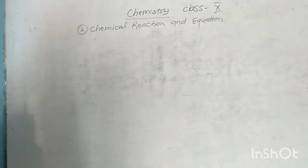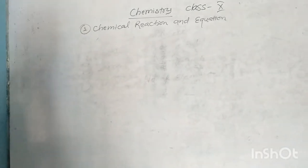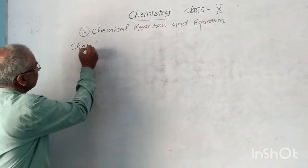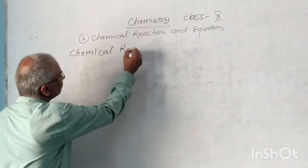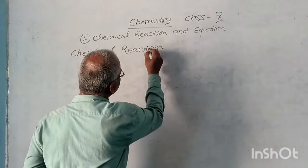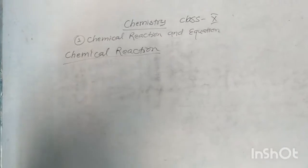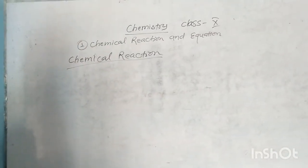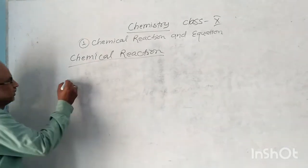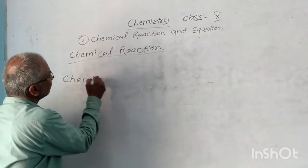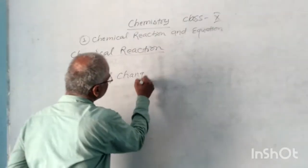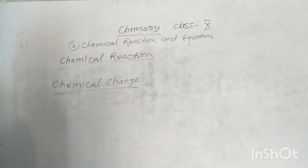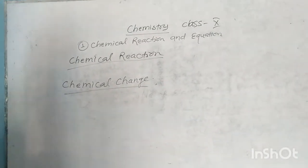In this chapter, Chemical Reaction and Equation, we first of all learn about Chemical Reaction. Chemical Reaction is related to Chemical Change. We discuss about what is Chemical Change. In our life, there are two types of changes: Physical Change and Chemical Change.